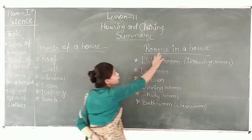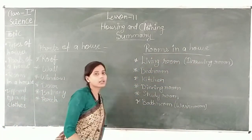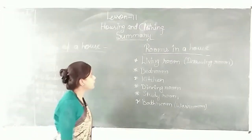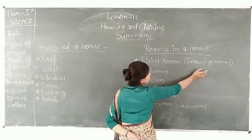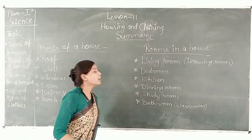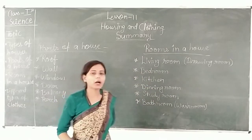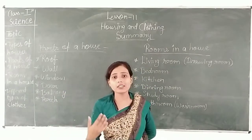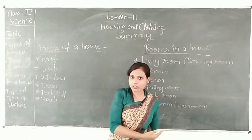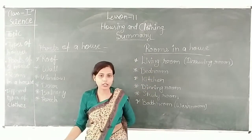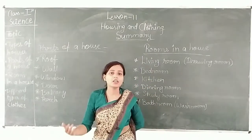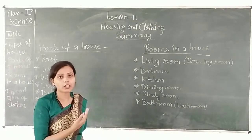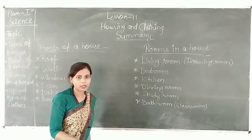Next hai rooms in a house — yaani ek house mein kaun-kaun se rooms hote hain. First hai living room, jise hum drawing room bhi kehte hain. Living room hamare ghar ka sabse pehla room hota hai. Is room mein chairs rakhi hoti hain ya sofa rakha hota hai. Is room mein jo bhi guests hamare ghar mein aate hain, unhe hum welcome karte hain aur bithate hain.